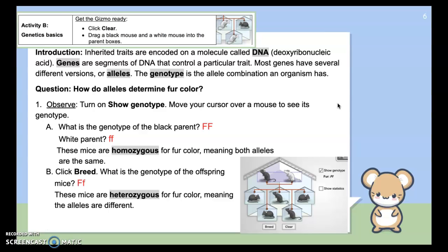So now in part B, we're taking it a step further. It says, inherited traits are encoded on a molecule known as DNA. We already know that. Genes are segments of DNA that control a particular trait. Most genes have several different versions or alleles. And the genotype are the gene combinations. The letters, the alleles that make up an organism's gene combinations.